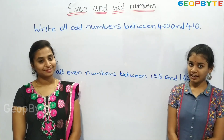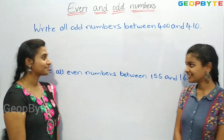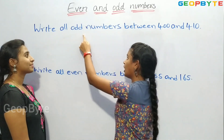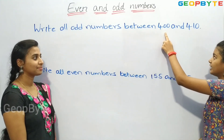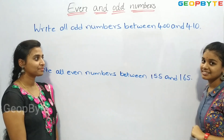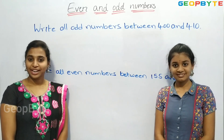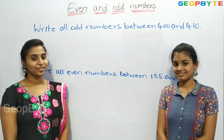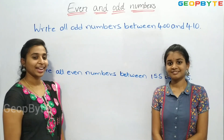Next question: write all odd numbers between 400 and 410. Children, as you know, odd numbers end with 1, 3, 5, 7, 9. Let us write.